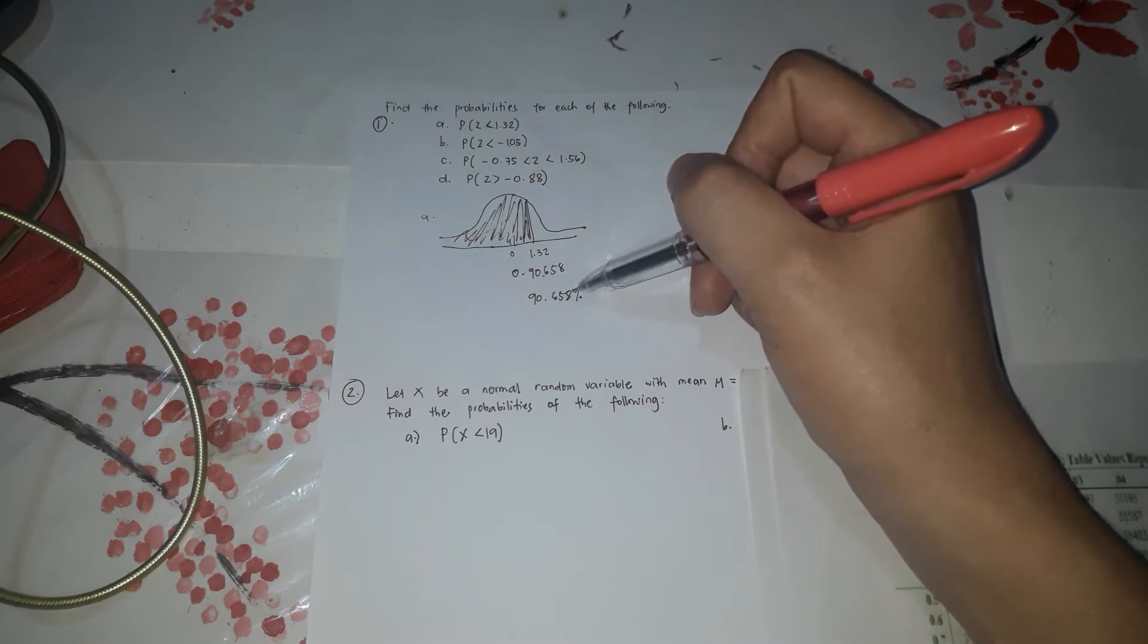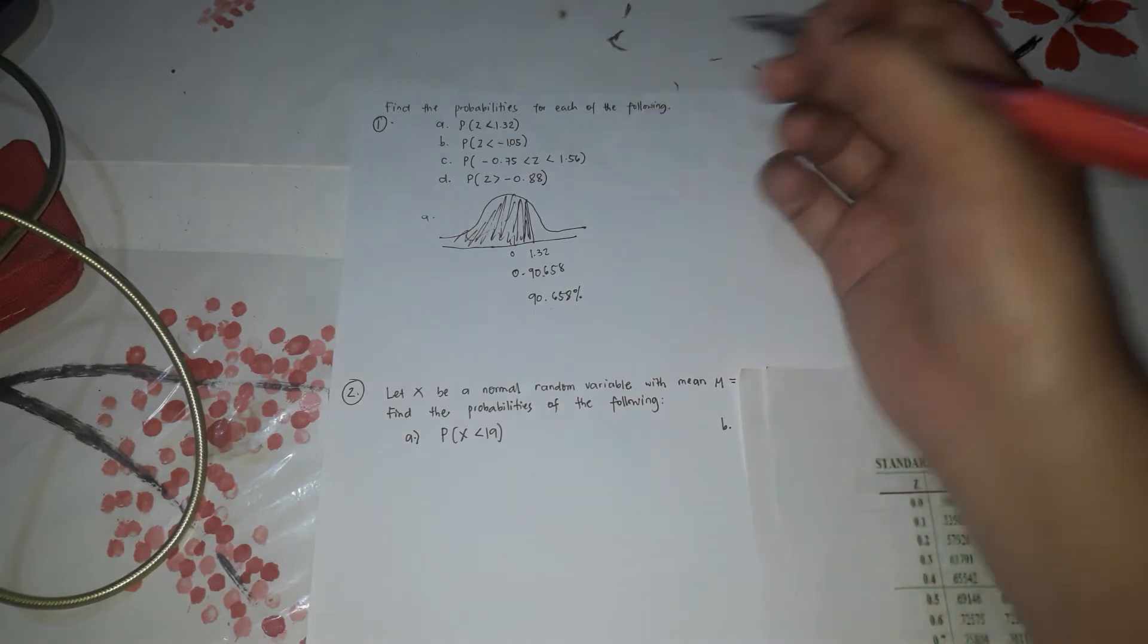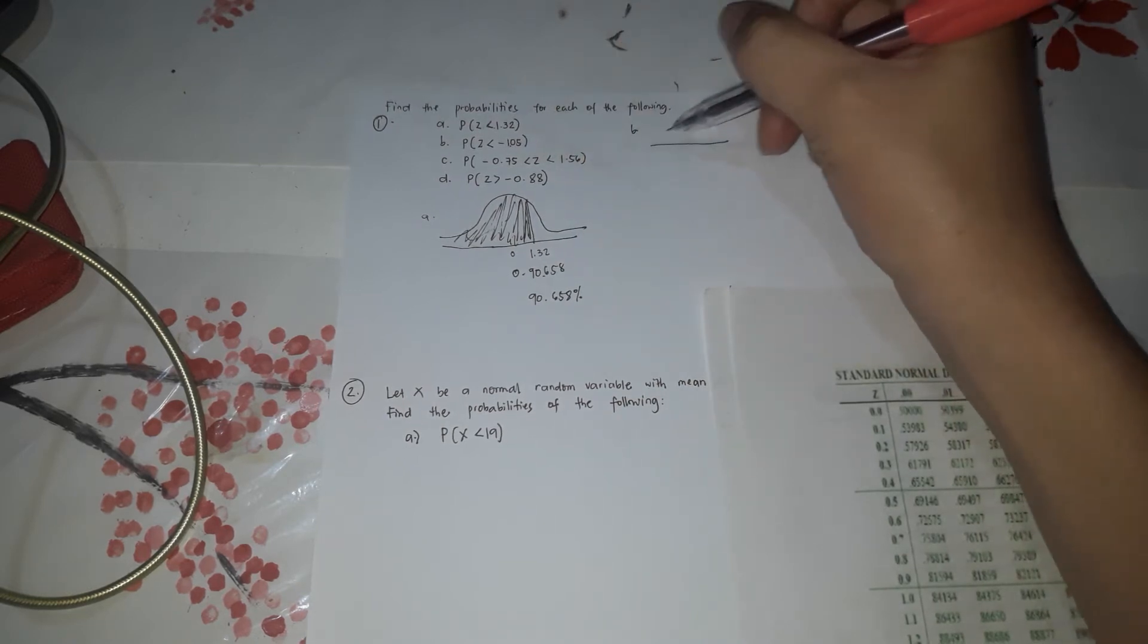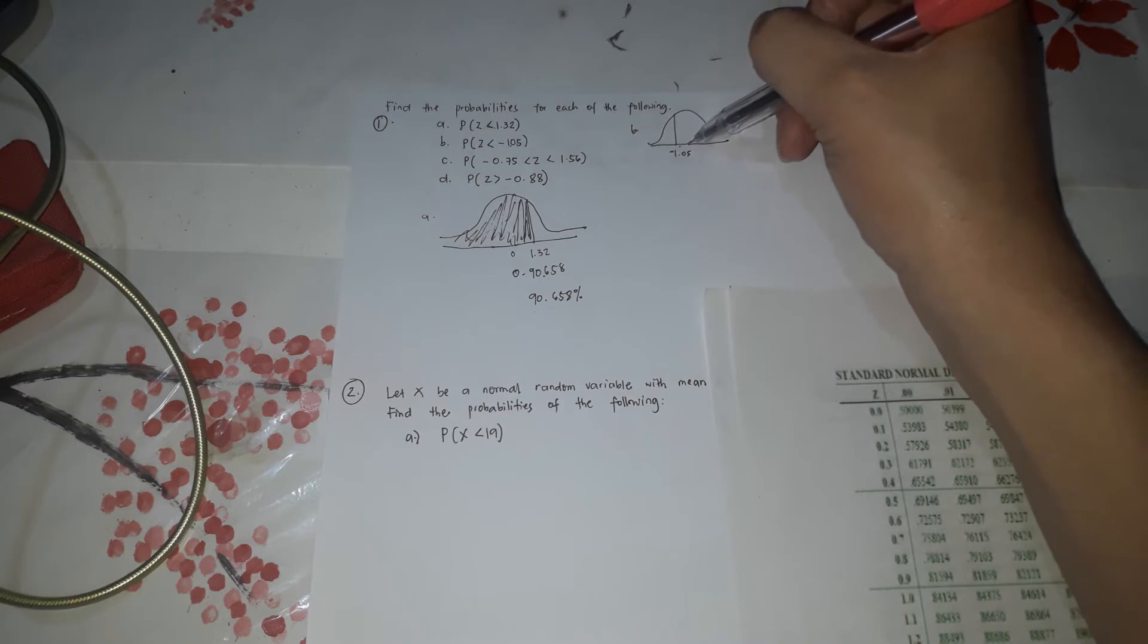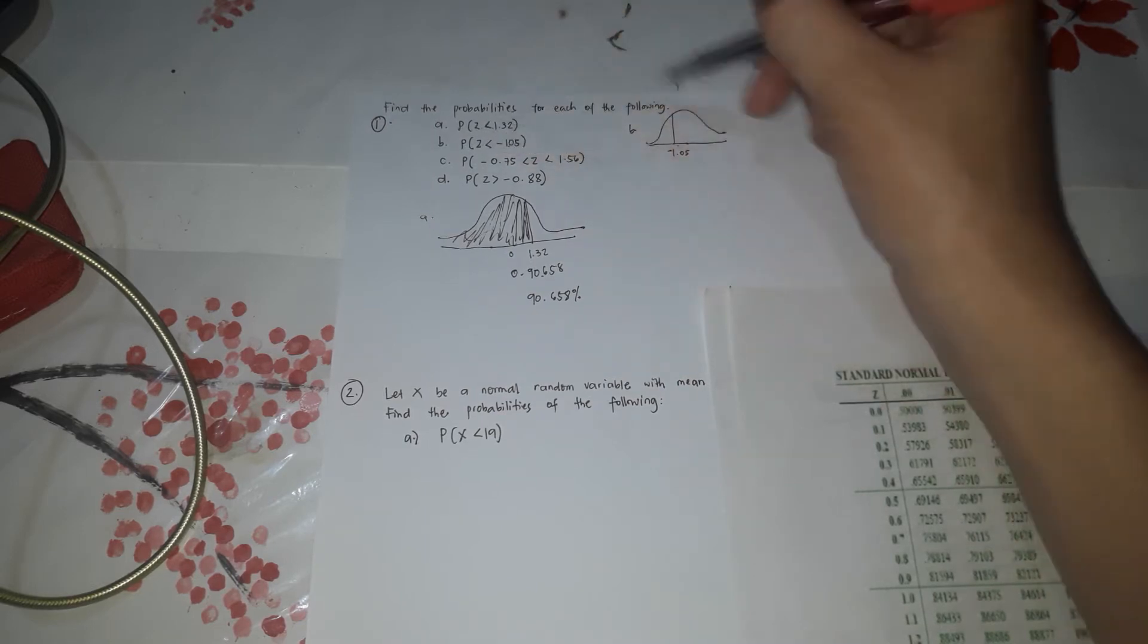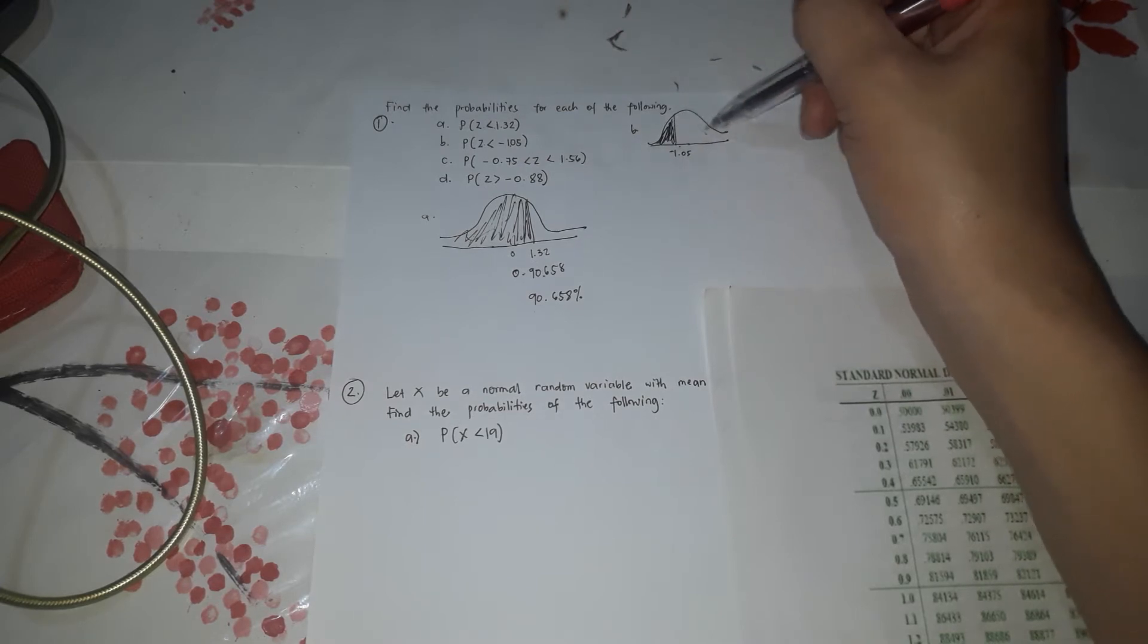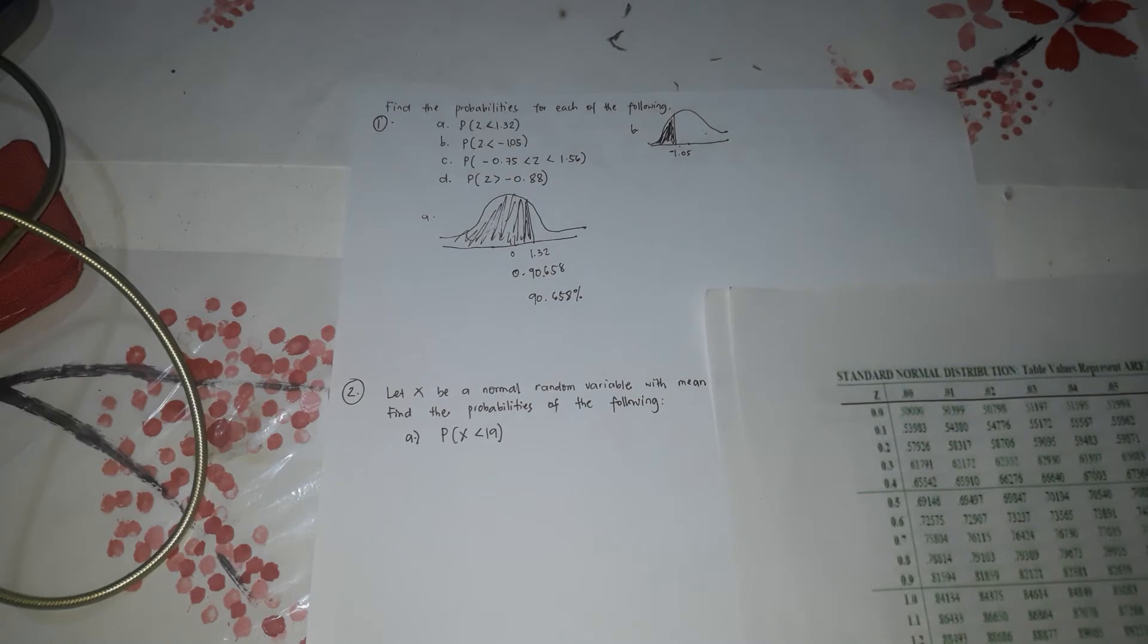So 90.658%. So the probability that the Z-score is less than 1.32 is 90.658%. So the letter B, the Z-score is less than negative 1.05. So this is 0. So here, negative 1.05. So the left is 0 because it's negative. So the Z is less than. So less than in here. So less than.